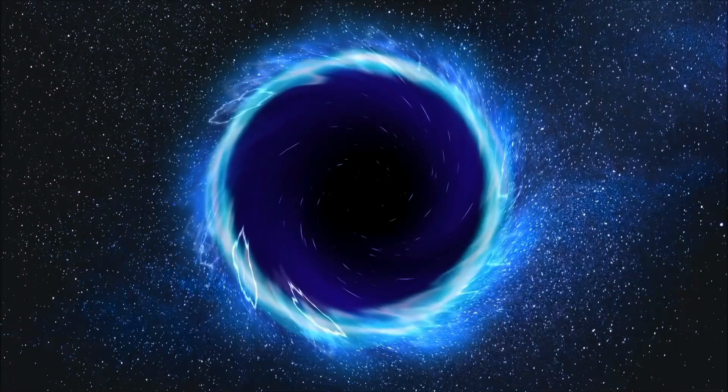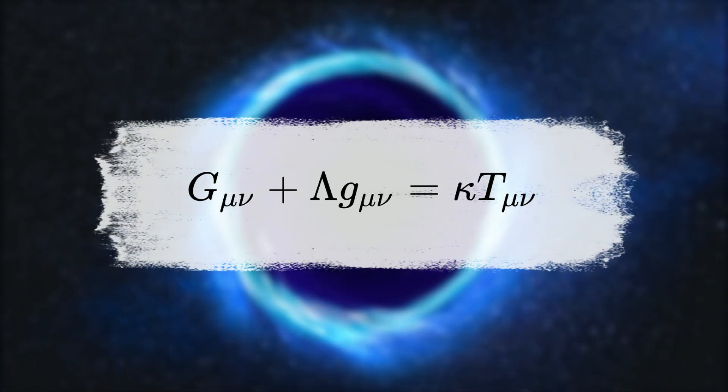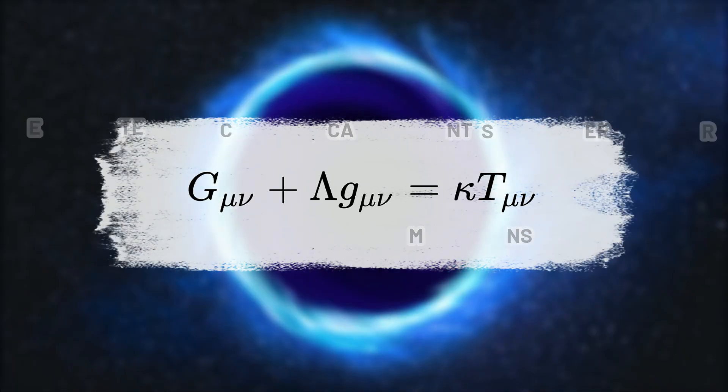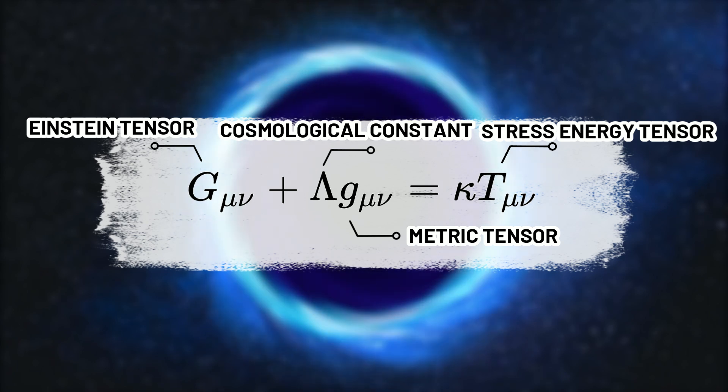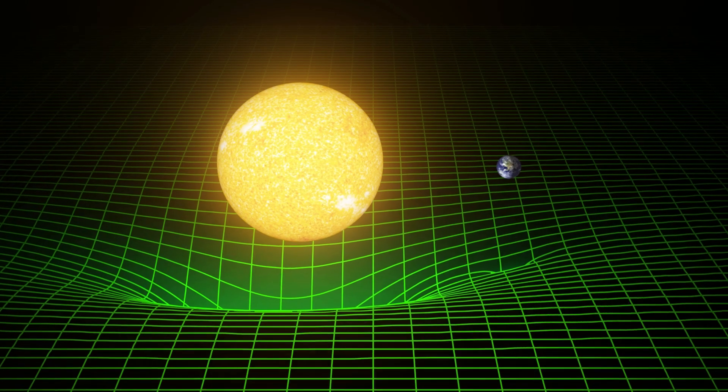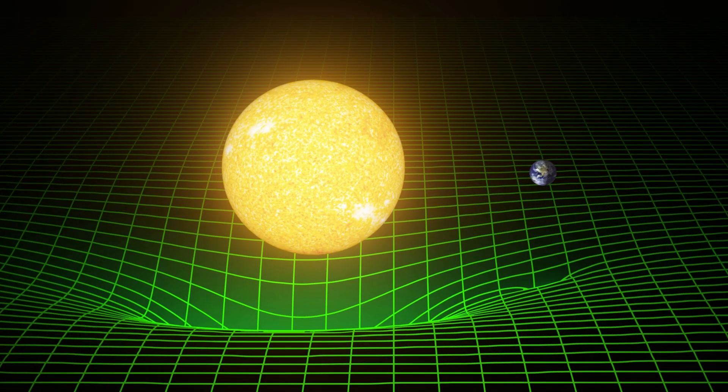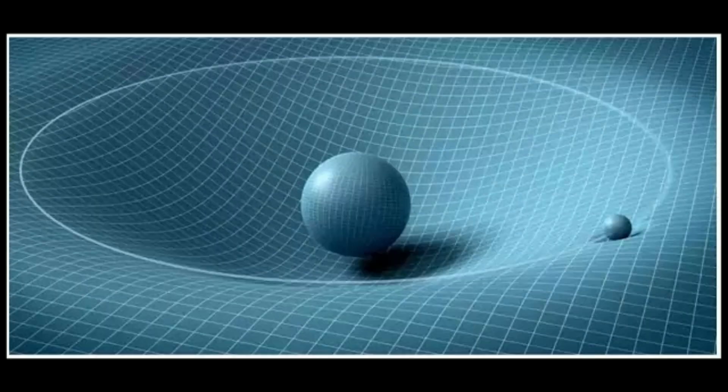The third most important equation in physics is the General Theory of Relativity. This theory has essentially replaced Newton's Law of Gravitation. The equations of General Theory of Relativity describe how the space-time fabric of our universe is affected by the mass or energy of various objects. Whenever mass or energy is present, it twists and curves the space-time fabric, and nearby objects' trajectories are affected by this curvature.